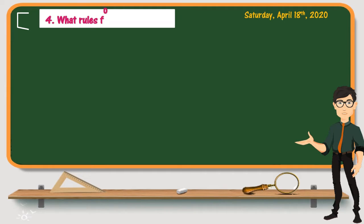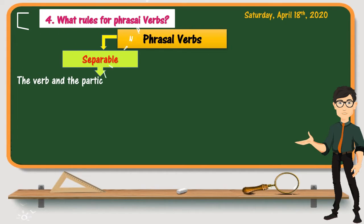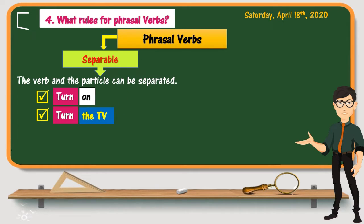Another thing to know is that when we use a verb with a particle — a preposition or an adverb — sometimes we can separate between the two, and other times we cannot. That's why we have separable phrasal verbs, where the verb and particle can be separated. For example: turn on the TV — it is also correct to say turn the TV on.